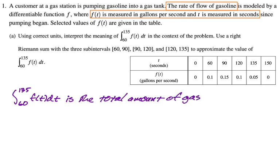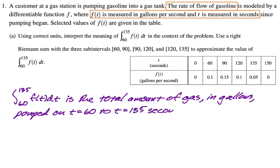I'm going to say in gallons because we're pumping gallons per second. So in gallons. And then we will say that has been pumped on what time interval. So pumped on the time interval t equals 60 to t equals 135 seconds. But then in the context of the problem, those seconds represent seconds since pumping began.